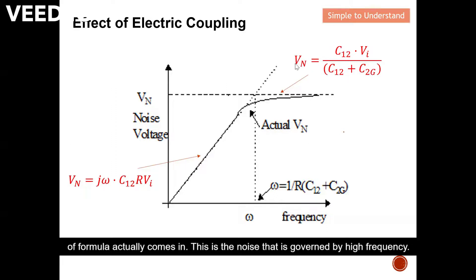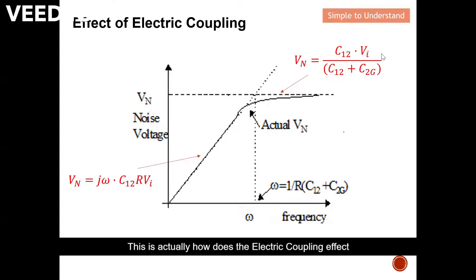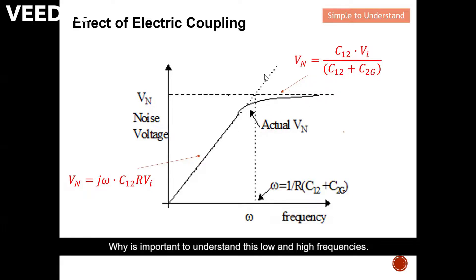Once we reach high frequency, the other set of formulas applies. Since the high-frequency formula looks like a DC source, the noise voltage becomes saturated and forms a flat straight line. This is how the electric coupling effect behaves: linearly increasing at low frequency and saturating at high frequency.